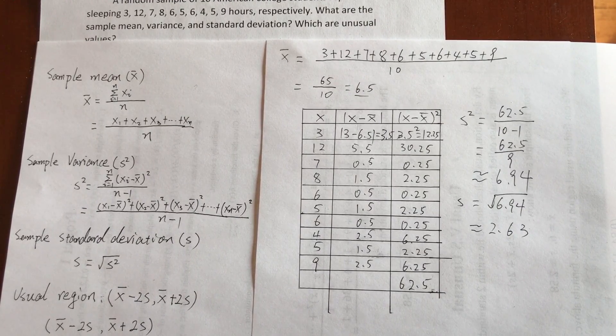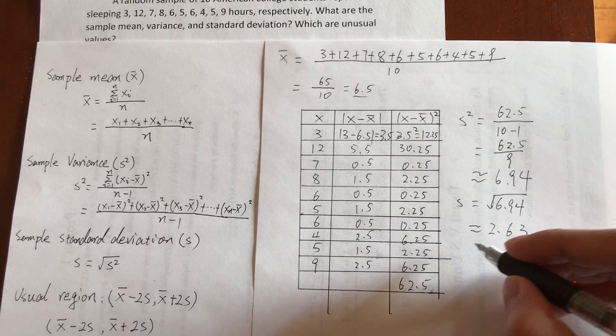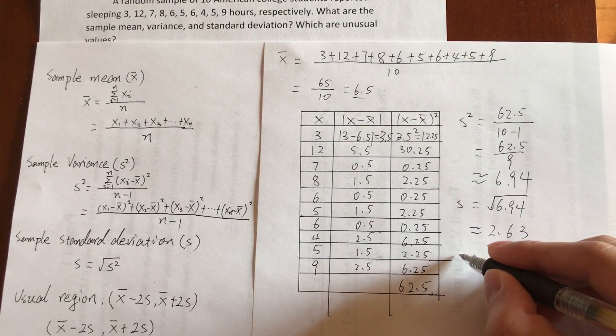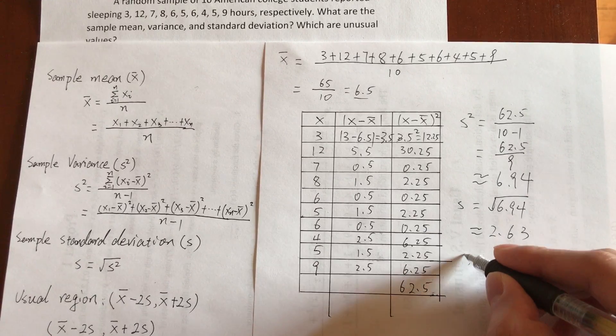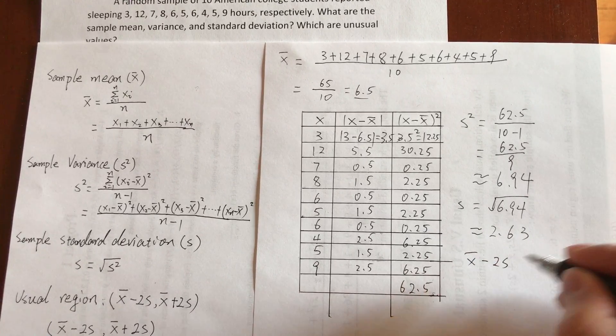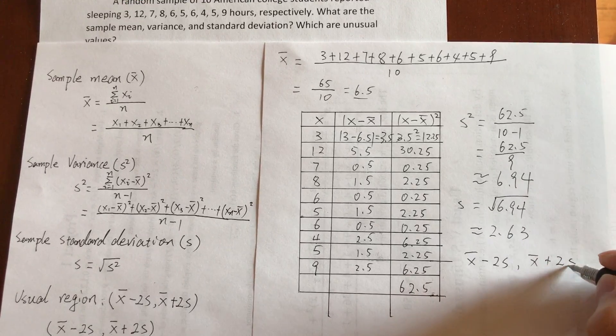We find out the unusual value. First, we need to find the usual region: X̄ minus 2 standard deviations, and X̄ plus 2 standard deviations.